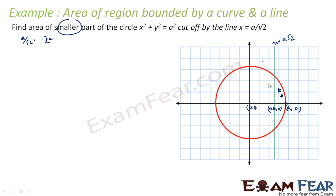The line divides the whole circle into two areas: the big area and the smaller area with stars. I am asked to find the smaller area. Now, by symmetry, I can find just the upper half of that smaller region and multiply by 2 because both halves are equal.